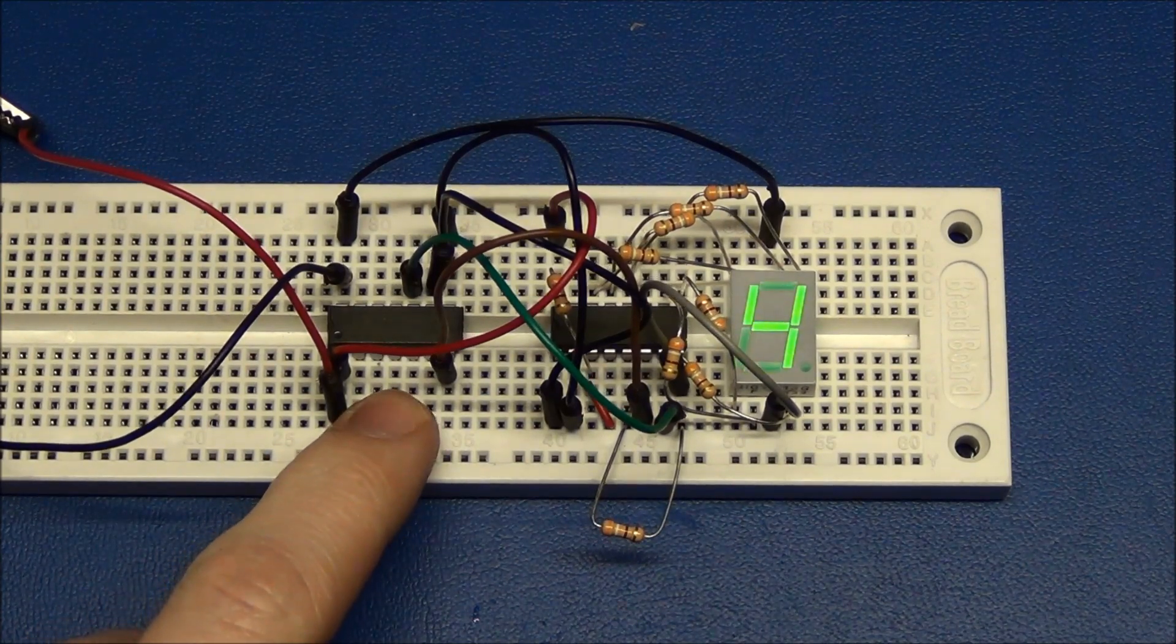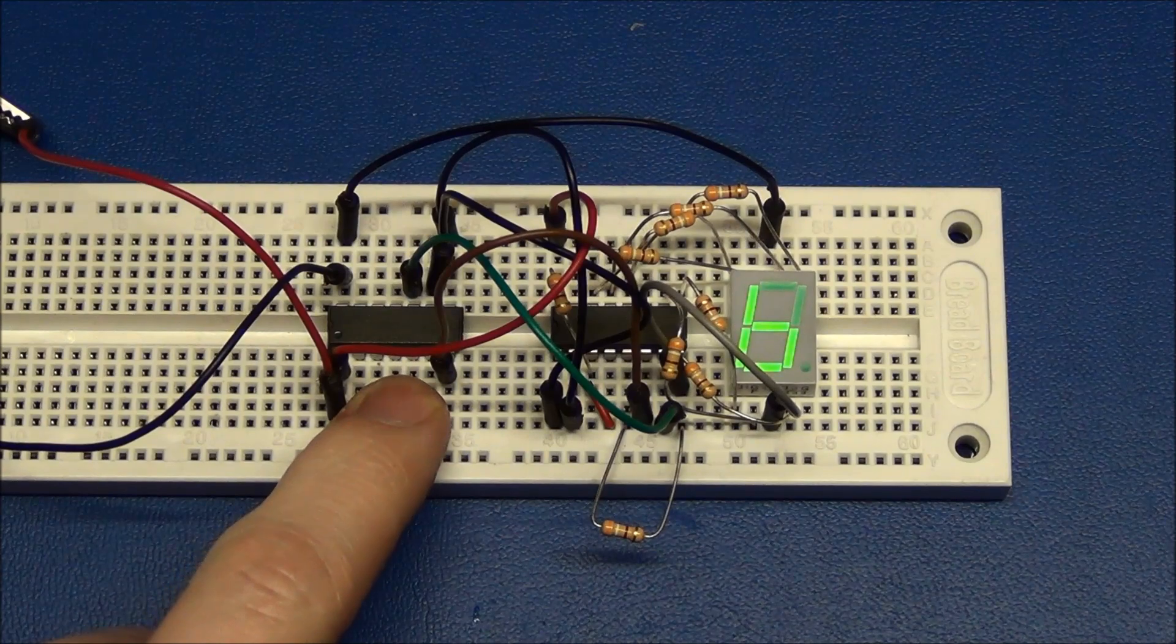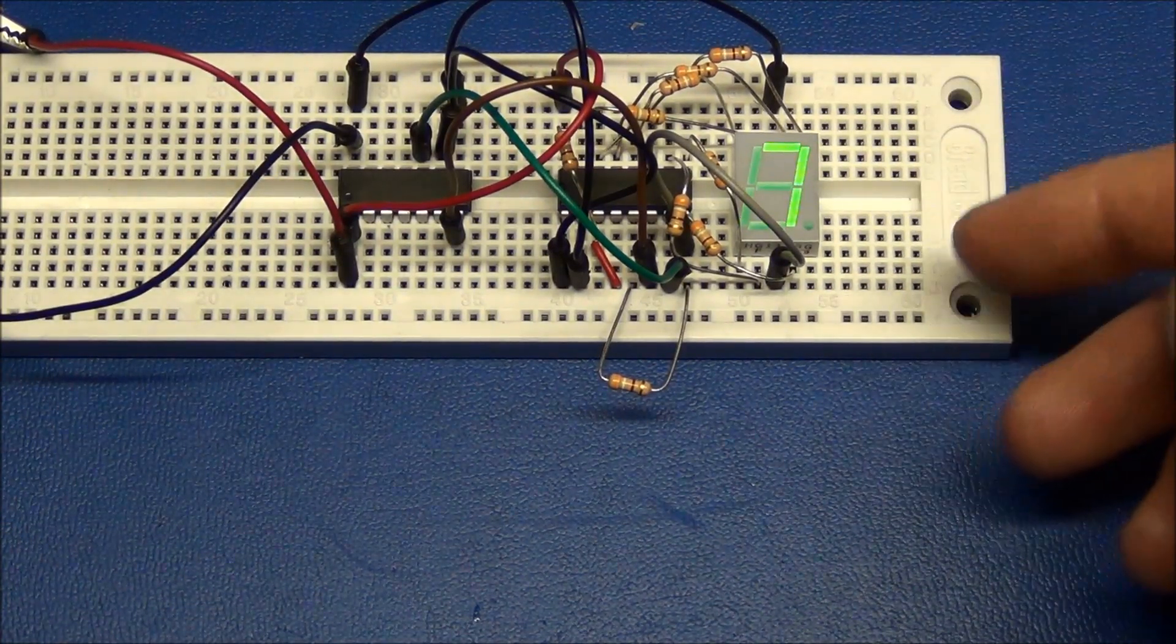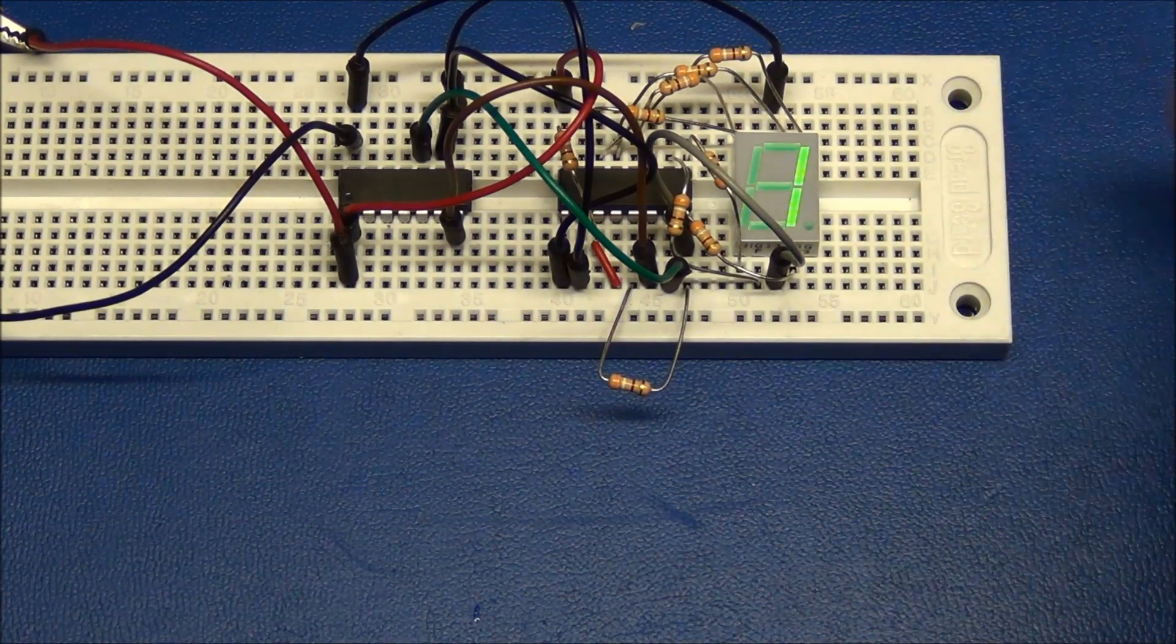And here I have just replaced the buttons with a simple microcontroller. And I have just set it to skip through the numbers, 0 through 9.